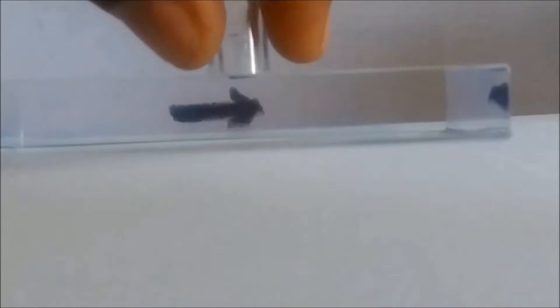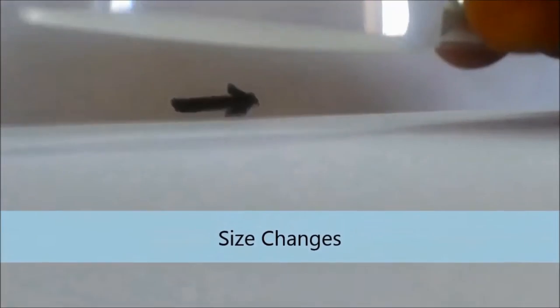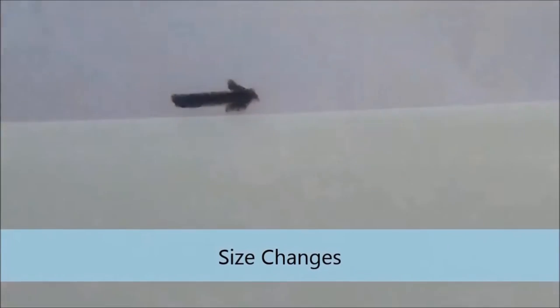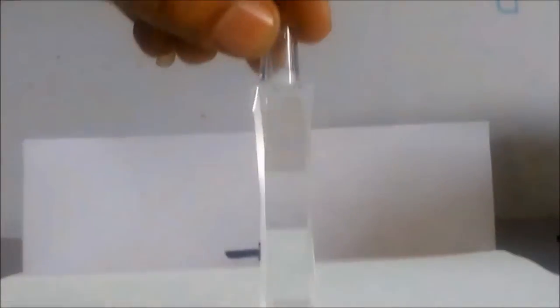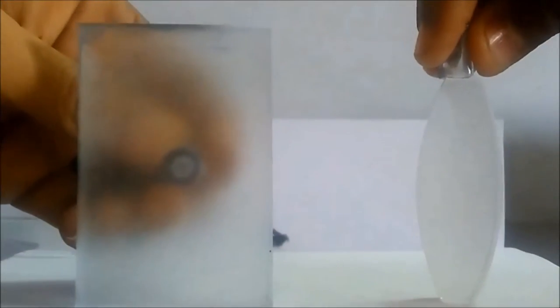We'll do a different activity. First we'll take a flat glass slab and observe the arrow behind it — it's the same size. Now we'll bring an object with a curved surface and the size of the arrow increases. Both were made of transparent glass. Now we'll bring another object with a different curvature and we'll observe the size of the arrow shrinks down. The last object is curved inwards and the second was a bulgy sort of thing — different curvatures cause light to deviate differently.